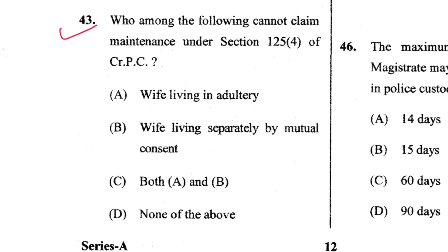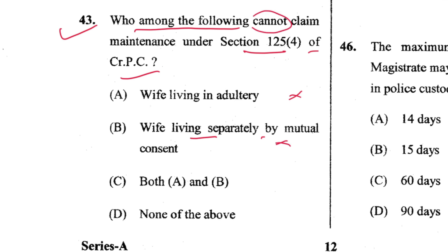Question 43: Who among the following cannot claim maintenance under Section 125(4) of CrPC? A wife living in adultery and a wife living by mutual consent — both cannot claim. C is the answer.